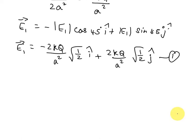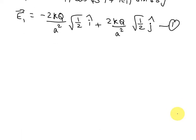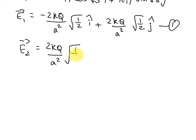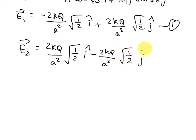Similarly, the E vector due to the upper-left +Q charge, E2 vector, equals (2KQ / A²)·(1/√2) î − (2KQ / A²)·(1/√2) ĵ. This is equation 2.